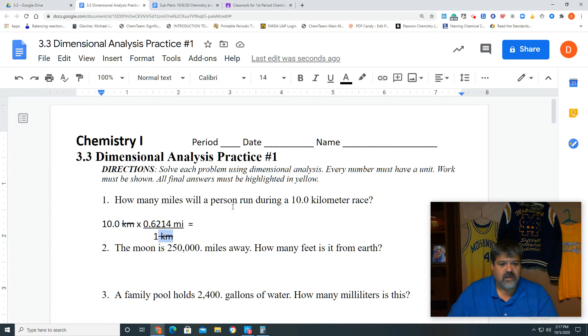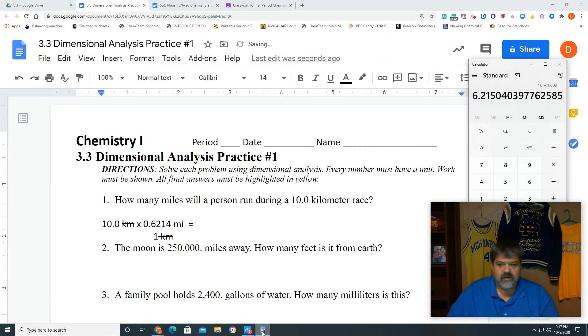And now when we look at this, we see that our only unit that we have left is miles. Read the question. How many miles will a person, miles, is going to be in our answer. So we're going to go ahead and answer that question. So what are we going to do? We are going to go ahead and do our math. So 10 times 0.6214 divided by 1.